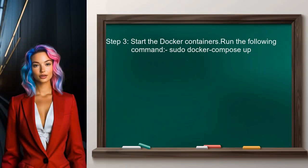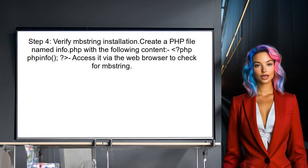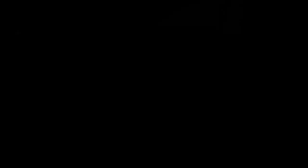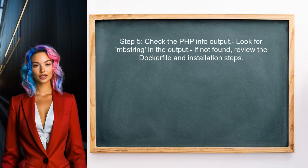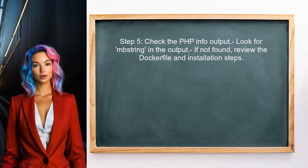After rebuilding the image, start the Docker containers to ensure the application is running with the updated configuration. To verify that the mbstring extension is installed correctly, check the PHP information by creating a PHP file that calls the phpinfo() function. If the mbstring extension appears in the output, you've successfully resolved the issue. If not, review the Dockerfile and installation steps.